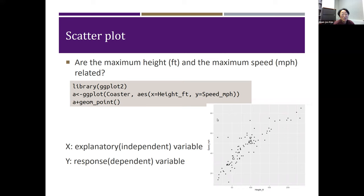Do you see if the maximum speed is related to maximum height? So maximum height, do you see any relationship? Potential relationship? What kind of relationship do you see if there is any?